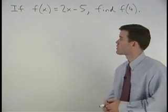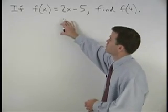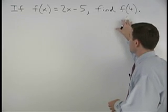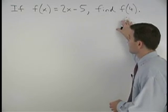Here we're given the function f of x equals 2x minus 5, and we're asked to find f of 4.